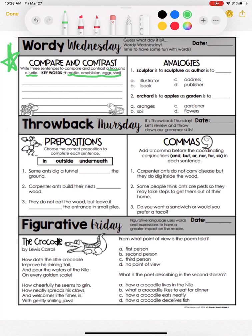Then in the second box there are analogies. For example, number one: sculptor is to sculpture as author is to blank — and you would pick the answer choice that you think fits best. Same for number two.